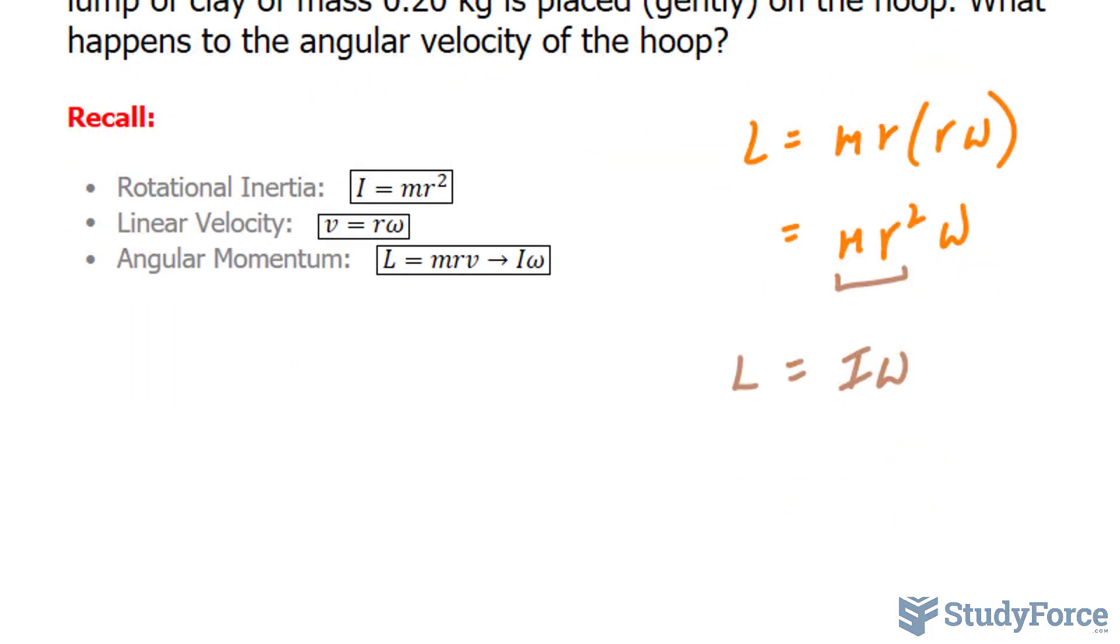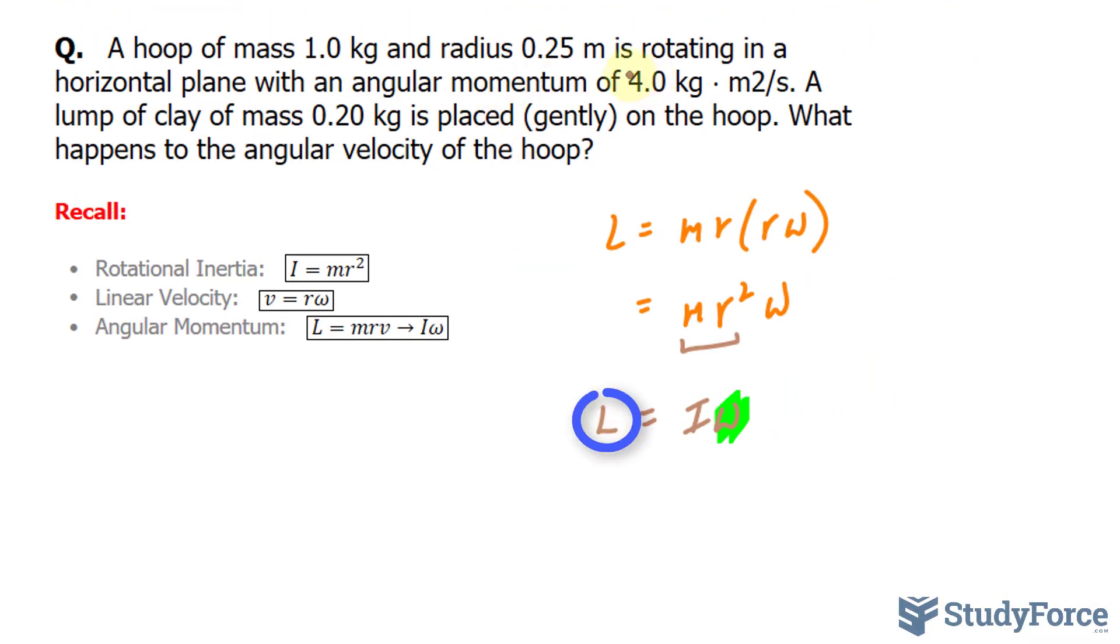So let's start by finding the angular velocity before the clay was added. We have L being replaced with 4.0 kilograms meters squared per second is equal to I. And I is calculated by taking the mass of 1.0 kilograms multiplied to the radius of 0.25 meters, and that's all being raised to the power of 2.